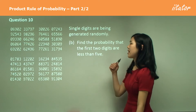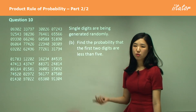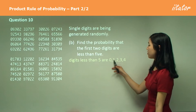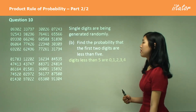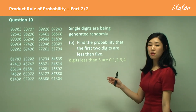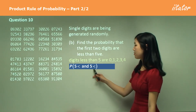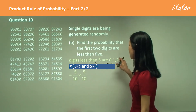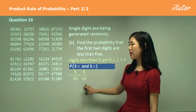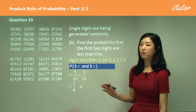Part B: when the first two digits are less than five. Less than five includes zero, one, two, three, and four — so there are five possibilities. The probability of the first number being less than five is five out of ten, and the second number being less than five is also five out of ten. Because it's 'this and this,' we multiply, and you should get one-quarter after simplifying.